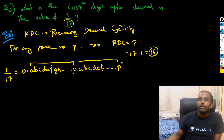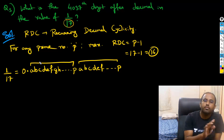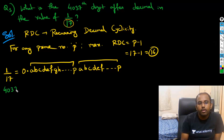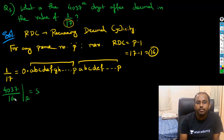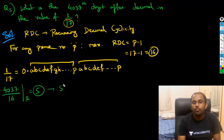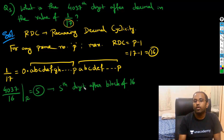So this is the concept of RDC. It is maximum — it can happen in between also. We want the 4037th digit. If I divide 4037 by 16, the remainder is 5. Because 16 into 252 is 4032, yes. So the remainder is 5. Basically, after the blocks of 16 are finished, I am looking at the 5th digit.